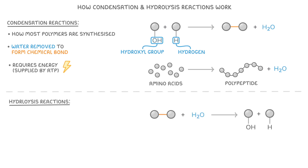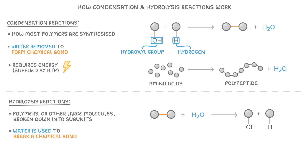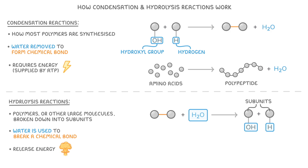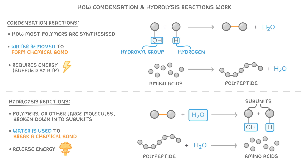On the flip side, in hydrolysis reactions, polymers or other large molecules like lipids are broken down into their subunits. In this case, water is being used to break a chemical bond between molecules, and it's the splitting of water that provides the H and OH groups needed to separate the molecule back into its subunits. These reactions release energy as a result of this process. A common example is taking a polypeptide and using a hydrolysis reaction to break it back down into amino acids.